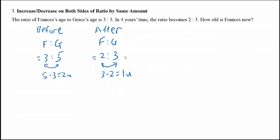So to do that, I simply multiply the ratio by 2. So 2 times 2 gives you 4, and 3 times 2 gives you 6.